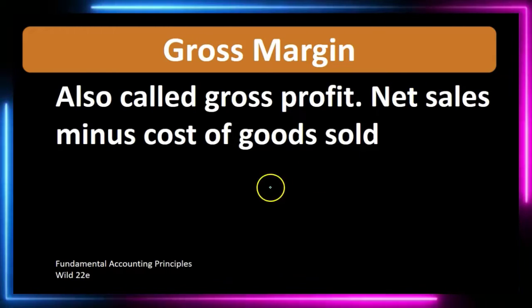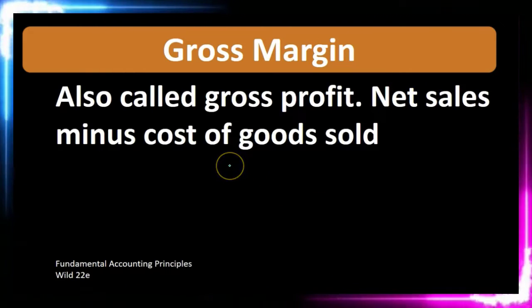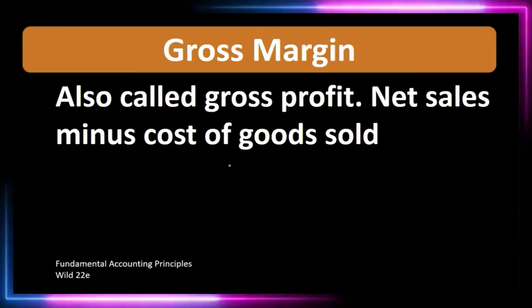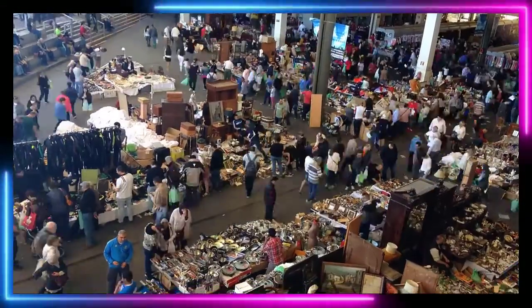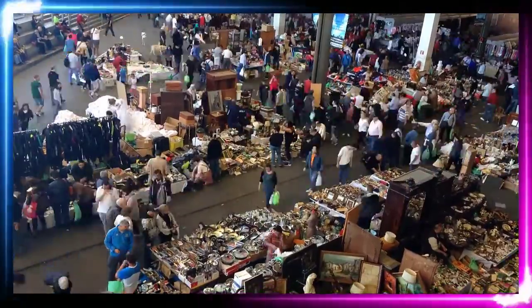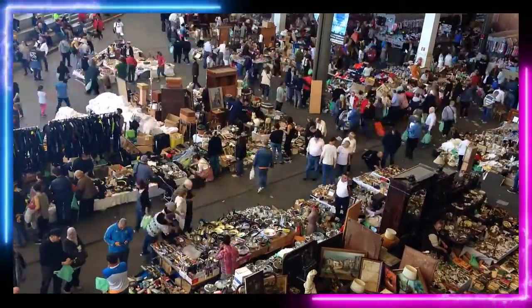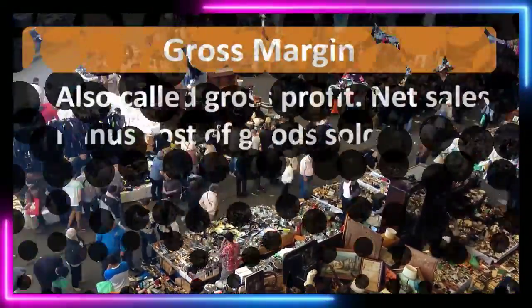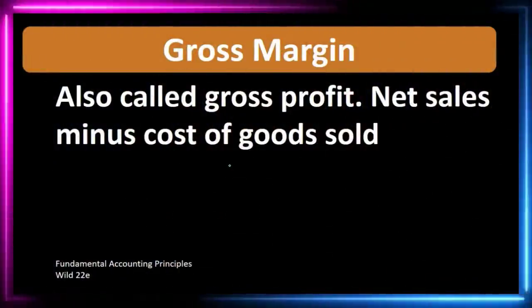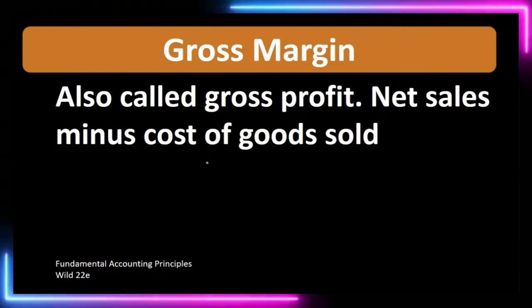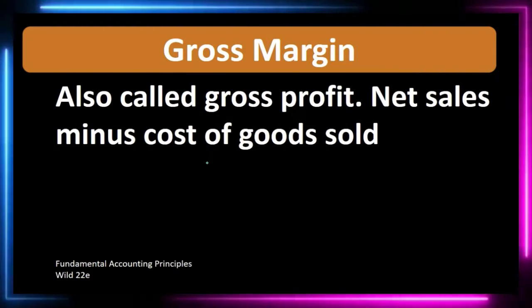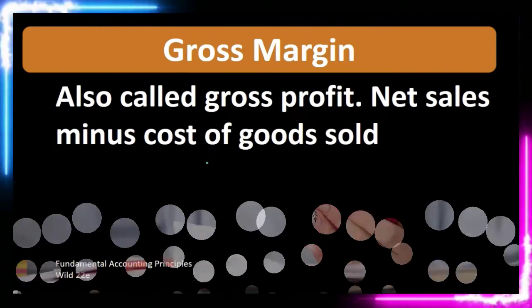Net sales is basically the sales number minus the cost of goods sold, which is the cost of the inventory we are selling. If we're a manufacturing company or a merchandising company, that cost of sales is usually the most important and largest expense. That's why we have this section on the income statement.